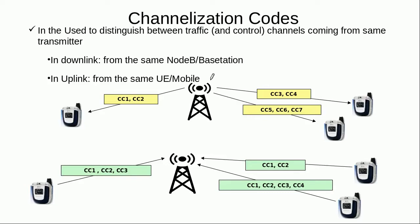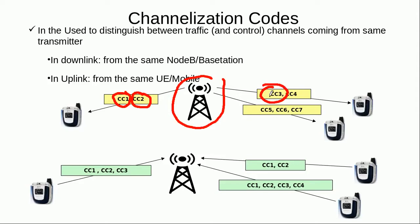For example, in the downlink it is the Node B or the base station which is the transmitter. Here we can see that there are seven channels in the downlink, so in order to differentiate between these seven channels they will each be assigned a different channelization code — channelization code 1 for the first channel, code 2 for the second, code 3 for the third, and code 4 for the fourth.